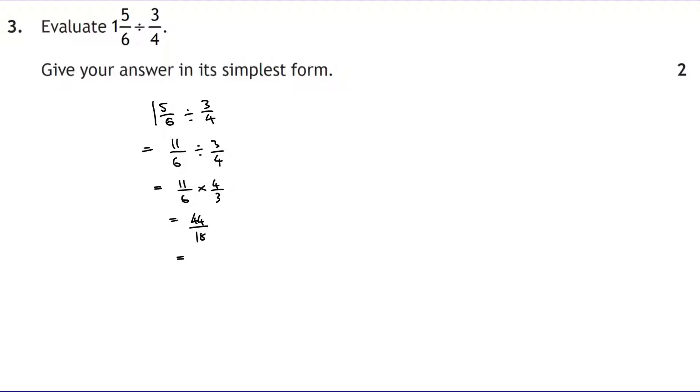That does simplify. They're both even numbers at the very least. So if we half them, we get 22 over 9. That doesn't simplify any more. There's no common factor between those two numbers. So we're going to change it into a mixed number. How many 9s go into 22? That would be 2 with a remainder of 4 over 9. Brilliant.